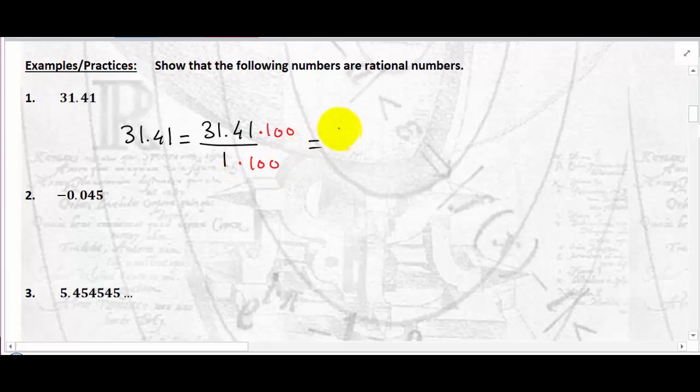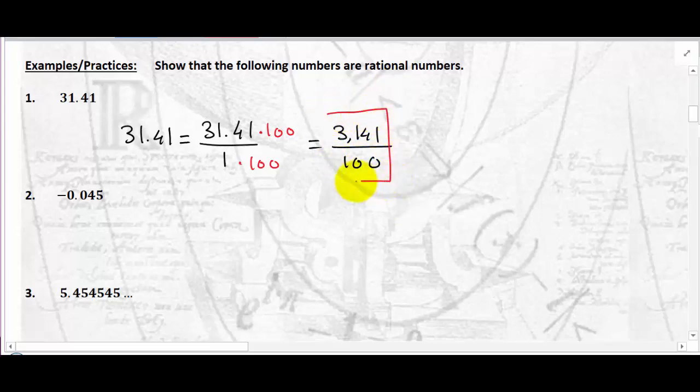Let's find two integers whose ratio is equal to 31.41. So 31.41 is the same as 31.41 divided by 1. You can multiply both sides of this fraction by 100, and you obtain 3,141 divided by 100. Now, this is a ratio of two integers. Therefore, 31.41 is a rational number.